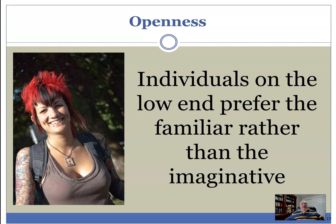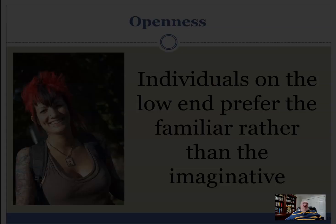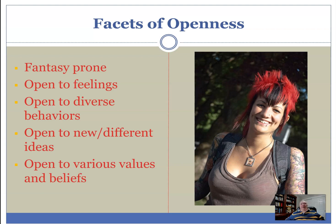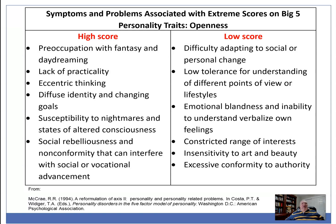Individuals low on openness tend to prefer familiar day-to-day things; they're not very imaginative, preferring the same places and activities without stretching their interests. The facets of openness include proneness to fantasy, openness to feelings, openness to diverse behaviors, openness to ideas, and various beliefs. On the downside, highly open people can have preoccupations with fantasies and daydreaming — they're not practical thinkers and can be eccentric. They're susceptible to nightmares and altered states of consciousness, and may be socially rebellious and non-conforming, which can interfere with social or vocational advancement.